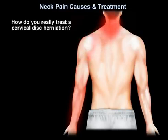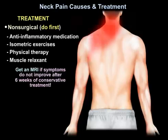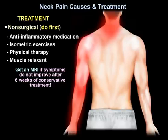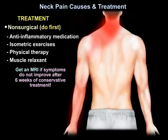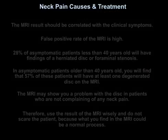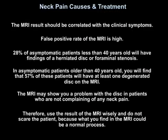For treatment of cervical disc herniation, you start with non-surgical treatment first: anti-inflammatory medication, isometric exercises, physiotherapy, and muscle relaxants. Get an MRI if symptoms do not improve after 6 weeks of conservative treatment. The MRI result should be correlated with the clinical symptoms, because the false positive rate of MRI is high — 28% of asymptomatic patients under 40 years old will have findings of a herniated disc or foraminal stenosis.